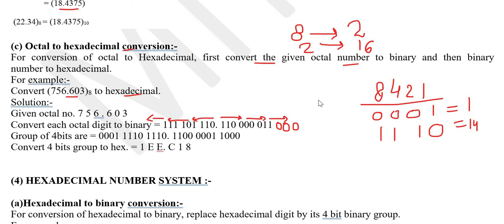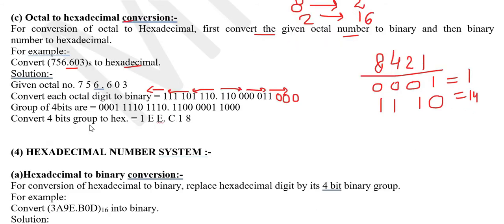So 10 is A, 11 is B, 12 is C, 13 is D, and 14 is represented by E. So the number 14 in our group is written as E. This is how you do the octal to hexadecimal conversion.